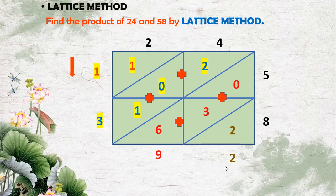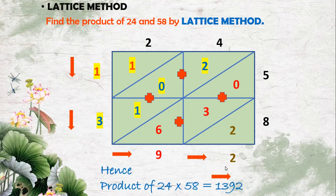The required product is 1392, where 1 is the thousands digit, 3 is the hundreds digit, 9 is the tens digit, and 2 is the ones digit. Hence, the product of 24 and 58 equals 1392. This is how the lattice method helps us find the product of numbers.